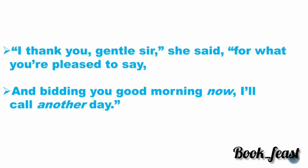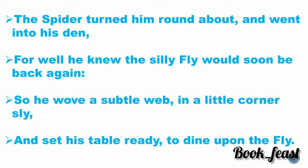The spider turned around and went into his den. Den is the home of the lion — the poet uses 'den' because the spider seems to be the king of his web. The spider knows the silly fly will soon come back again, so he wove a subtle web — a mysterious and delicate web — in a little corner, and set his table ready. Not to provide food for the fly, but in order to make the fly his daily food.